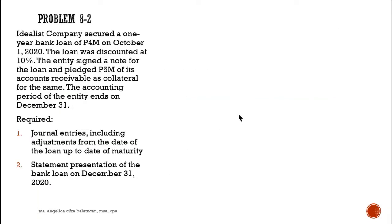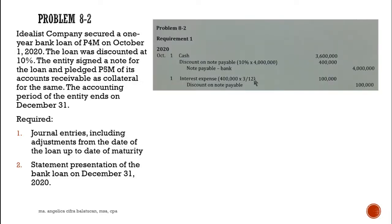The next problem is Idealist Company. Idealist Company secured a one-year bank loan of 4 million on October 1, 2020. The loan was discounted at 10 percent. The entity signed a note for the loan and pledged 5 million of its accounts receivable as collateral. The requirements are journal entries and statement presentation on December 31.